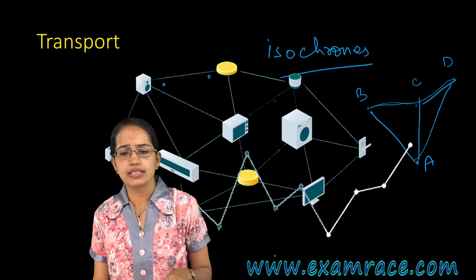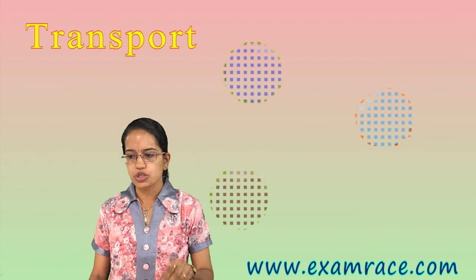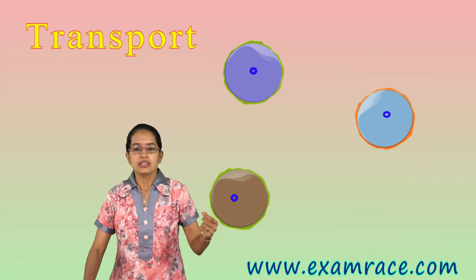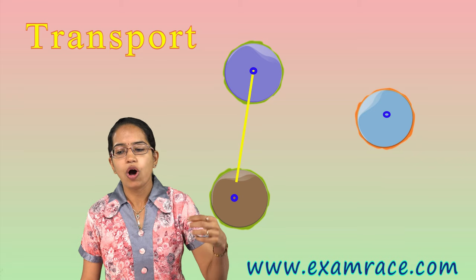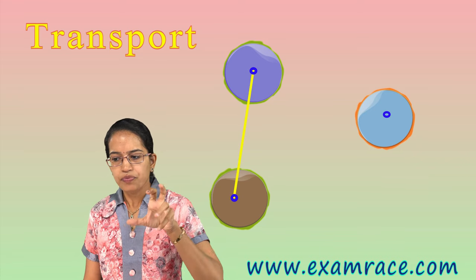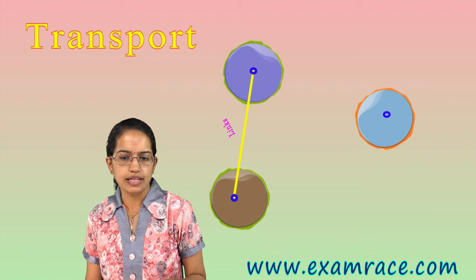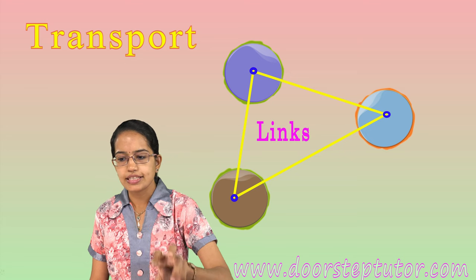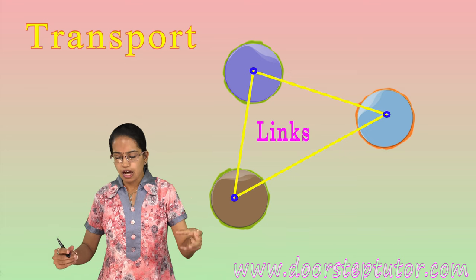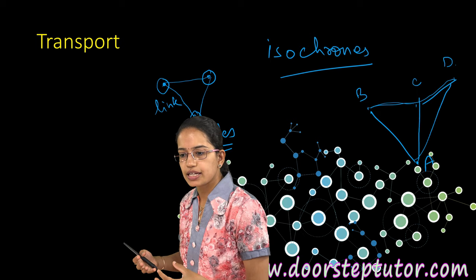Nodes are the points where routes come in. A route joining two nodes is known as a link. The path that joins the nodes is what is known as a link. A developed network has numerous links which are very well connected.